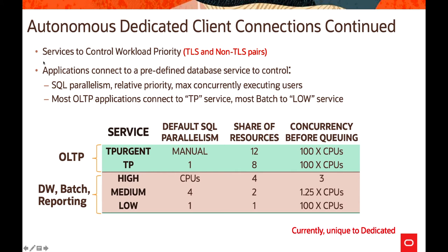With TLS and non-TLS pairs, applications connect with a predefined database service that controls SQL parallelism, relative priority, and maximum concurrency for executing users. Five services are defined: TP Urgent, TP, High, Medium, and Low. Most OLTP applications use the TP service; batch workloads use the Low service. For Data Warehouse, batching, and reporting queries, you select between High, Medium, and Low based on how many concurrent sessions or operations you expect.